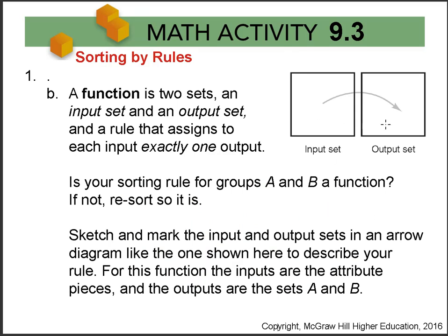Then draw an arrow diagram. Your input set in this case is the attribute pieces, and the output set, that's where A and B live, that can be described as your rule.